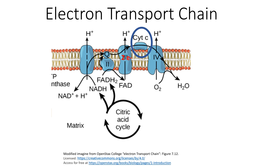Next, cytochrome C, which is an electron carrier, will go to complex three, and what it will do is oxidize complex three, meaning that complex three will lose its two electrons while cytochrome C gains those two electrons.